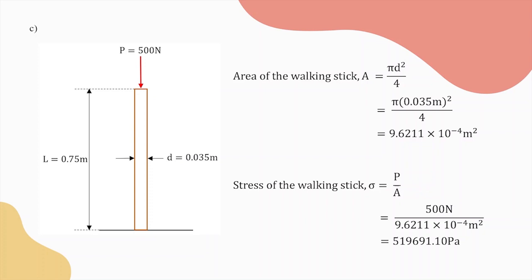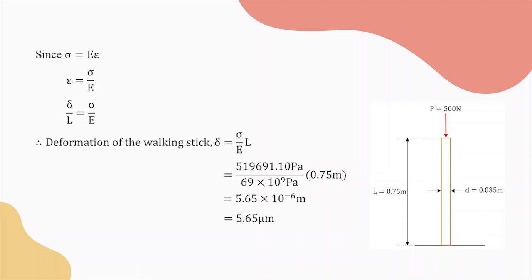Next, the formula of deformation of the walking stick can be derived from this formula, where E represents the modulus of elasticity and epsilon represents the strain. Then the definition of the strain can be represented by this formula, where delta represents the deformation of the walking stick and L represents the length of the walking stick. Therefore, we will get the formula of deformation of the walking stick which is equal to stress over modulus of elasticity times length of the walking stick. By substituting the respective values into this formula, the deformation of the walking stick is 5.65 micrometers. That's all for the results and discussion. Thank you.